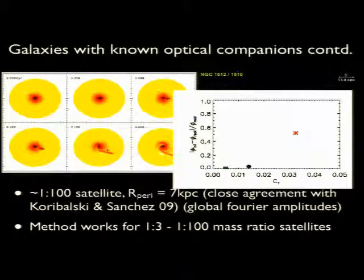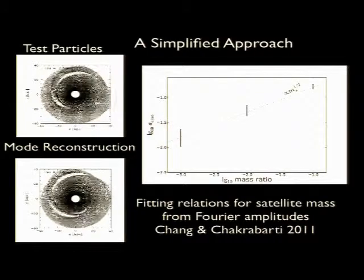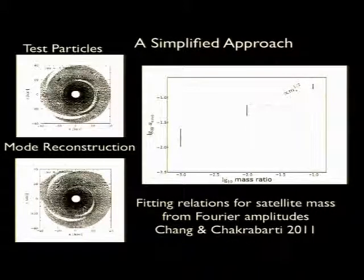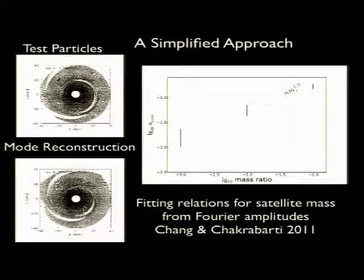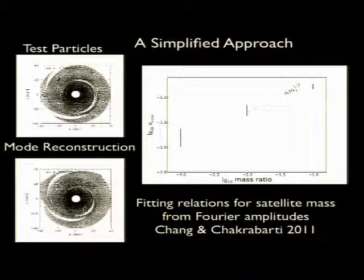We believe the method works over a very large range in perturber-to-primary galaxy mass ratio, and allows you to quantitatively characterize dark matter dominated dwarf galaxies simply from analysis of observed disturbances in outer H1 disks without requiring any knowledge of their optical light. Because the hydro simulations take some time to do, we also developed a semi-analytic way of studying these disturbances, which allowed us to derive scaling relations between the sum of the Fourier amplitudes and the satellite mass. The amplitude scales as the square root of the satellite mass ratio, so if you believe the model holds, you can simply read off the satellite mass from the observed H1 map.